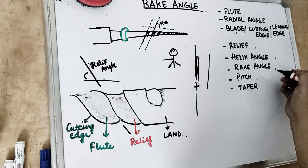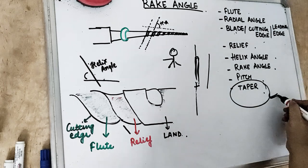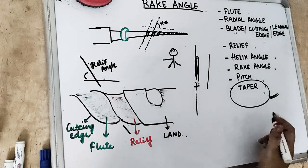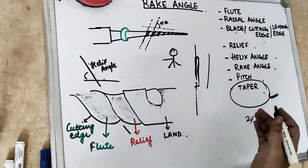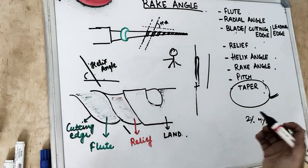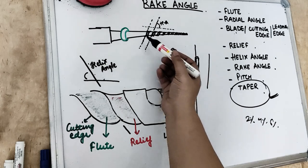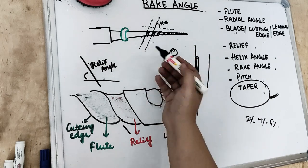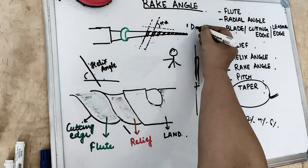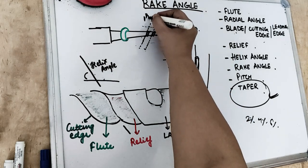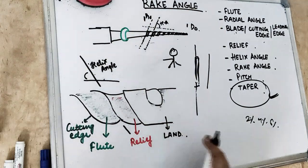We also have relief, helix angle, rake angle, pitch, and taper. Taper we have already covered in instrument standardization — we have 2 degree, 4 degree, or 6 degree taper. Tapering is the increase in diameter, and this increase is a percentage. There is a percentage increase in diameter as we go from D0 or D1 up to D16, with an increase in diameter at every 1 millimeter.